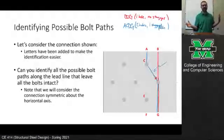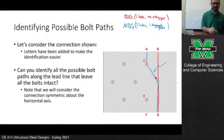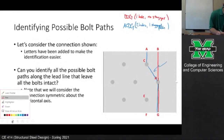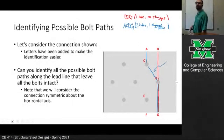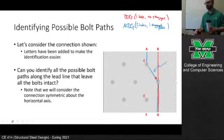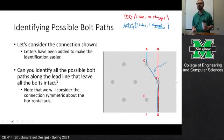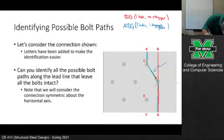Can anybody identify other paths? A student identifies ACDEF — that path goes through three bolt holes but has two staggered paths. Notice that all the bolts used in these paths are lead line bolts — they're the ones on the end, because the brake line is on the right and the main body of the member extends to the right.